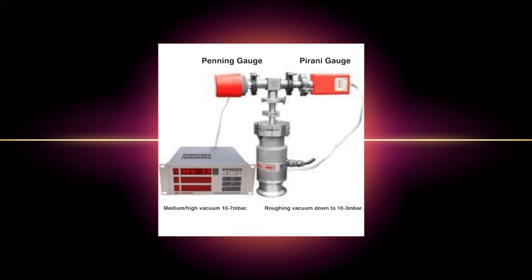A Pirani gauge works by a filament which carries a current and a heat sensor which measures thermal and radiative heat. The voltage or current is regulated to keep the temperature of the filament constant. As the vacuum system improves, less gas touches the filament and less current is needed to regulate the temperature of the filament. These changes in current are calibrated in the factory to correspond to different pressure readings. The Pirani gauge responds to pressure changes very fast.